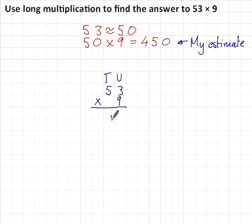3 × 9 is 27. 5 × 9, or 50 × 9 I should say, is 450, plus the 20 that I got waiting for me is 470. So my final answer is 477.